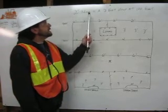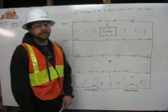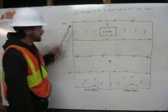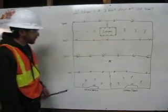A 2% slope is a 2 foot drop at 100 feet. Here in our parking lot example, we have a 400 foot parking lot.